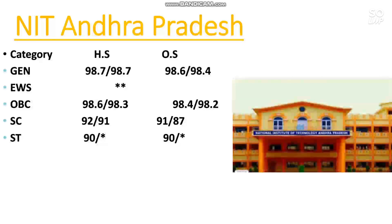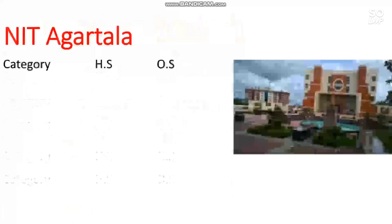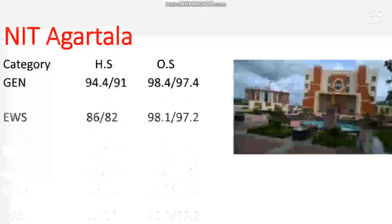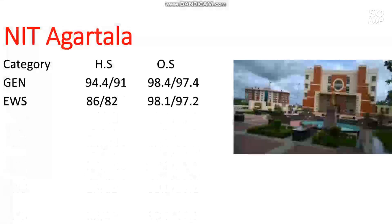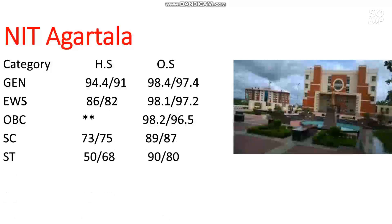I have already made a video on expected marks versus percentile for the April attempt — you can watch that as well. The next NIT is NIT Agartala. The cutoff for General is 98.4 and 97.4 percentile. For EWS: 98.1 and 97.2. For OBC: 98.2 percentile. For ST: 90 and 80 percentile for male and female.